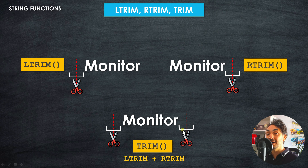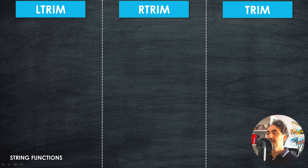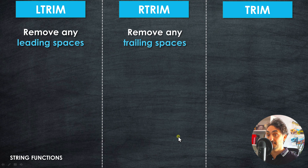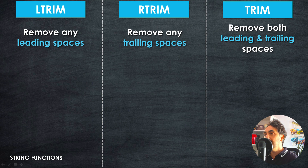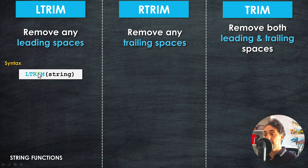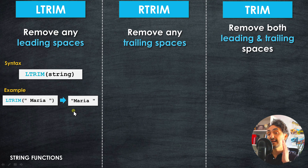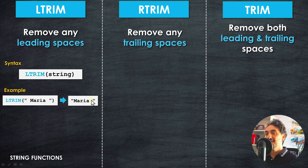To summarize: LTRIM removes leading spaces, RTRIM removes trailing spaces, and TRIM removes both. The syntaxes in Tableau are simple — for example, LTRIM accepts one string field and outputs a string. So if we have 'maria' with spaces on both sides, LTRIM will only remove the space from the left and leave the space on the right.